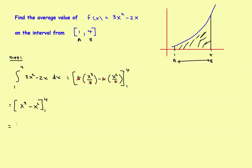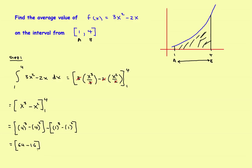Plugging in the four: 4 cubed minus 4 squared. Then plugging in the one: 1 cubed minus 1 squared. That gives 64 minus 16 minus (1 minus 1), which is 64 minus 16 equals 48, minus zero, giving 48. This is the area under the curve — you're halfway through the problem.